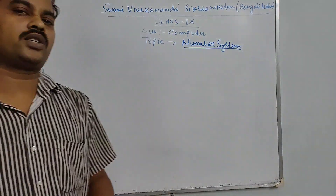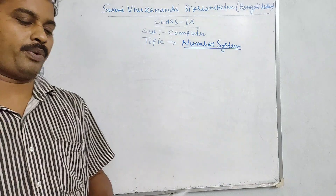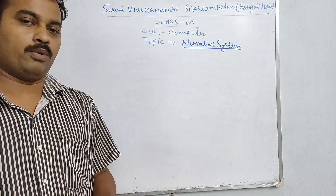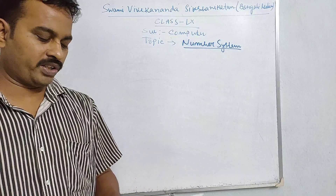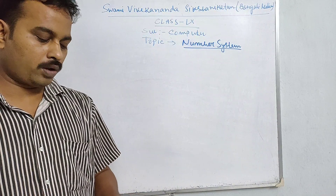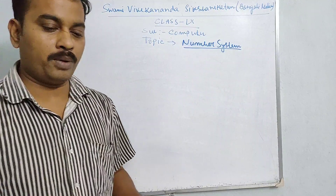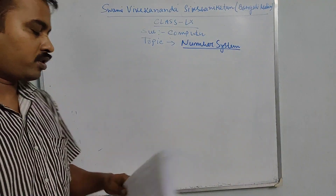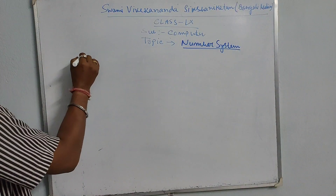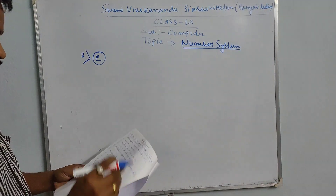Good evening everybody. Last day number system problem solve — question practice. Problem solve question number two ABCD. Today we solve question number PFG. The problem is discussed through YouTube video. Now we start with question number two E.